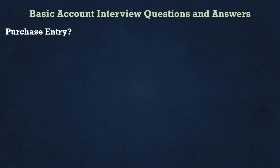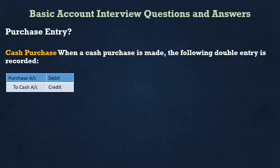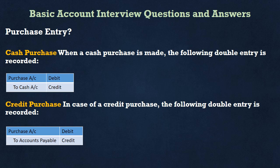First question: what is the purchase entry? For cash purchase, the entry is: Purchase Account debit, to Cash Account credit. In case of credit purchase, the entry is: Purchase Account debit, to Accounts Payable credit. If cash or a check is going out, you have to credit it.